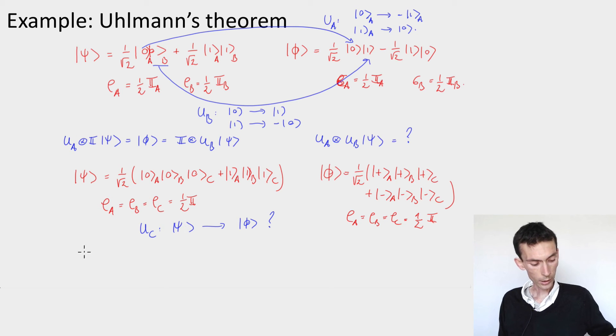And here you can check that it's not the case. So if you compute the reduced density on A and B for the state psi, you get half 0 0 plus half 1 1.